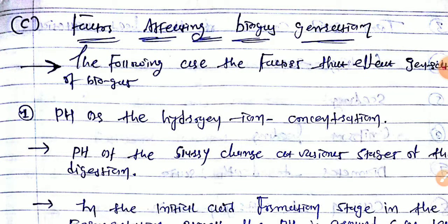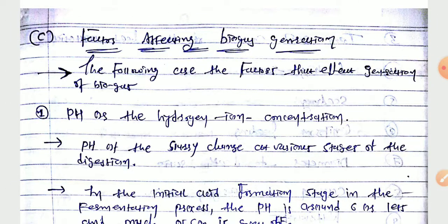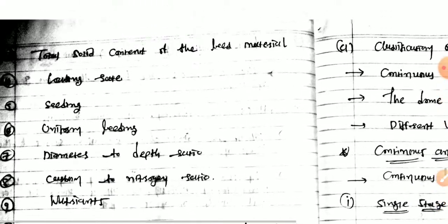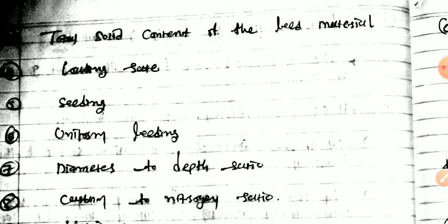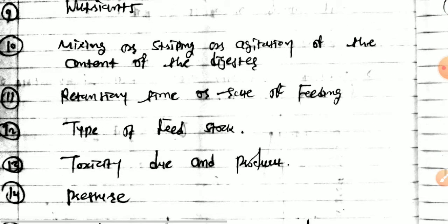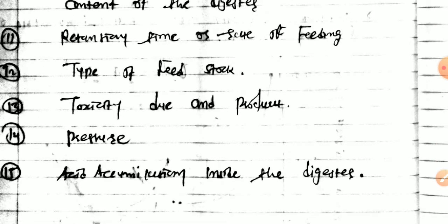In summary, the complete list of factors affecting biogas generation includes: pH or hydrogen ion concentration (with slurry pH changing at various digestion stages), total solid content of feed material, loading rate, seeding, uniform feeding, diameter to depth ratio, carbon to nitrogen ratio, nutrients, mixing and agitation of digester contents, retention time and rate of feeding, type of feedstock, toxicity, toxic product pressures, and acid accumulation inside the digester.